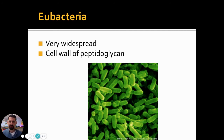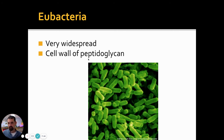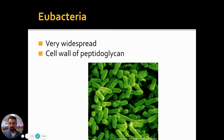Eubacteria are very, very common. You've got about 500 different types of bacteria living in your mouth and gut right now, and you have more bacterial cells in and on you than you have human cells. All eubacteria share a cell wall — like plants or fungi — but instead of cellulose or chitin, they use a different complex carbohydrate called peptidoglycan, which forms the cell wall surrounding each bacterium.